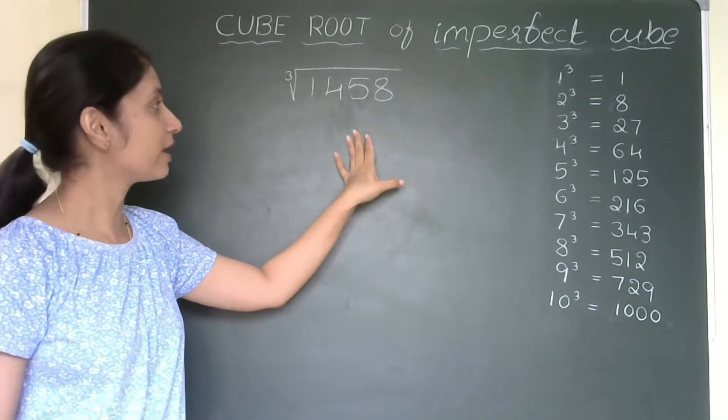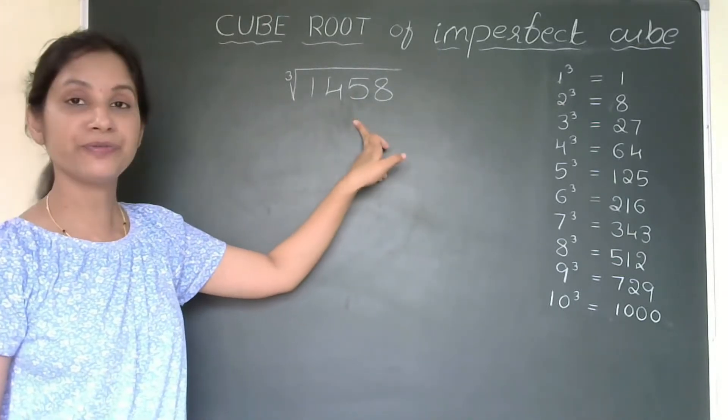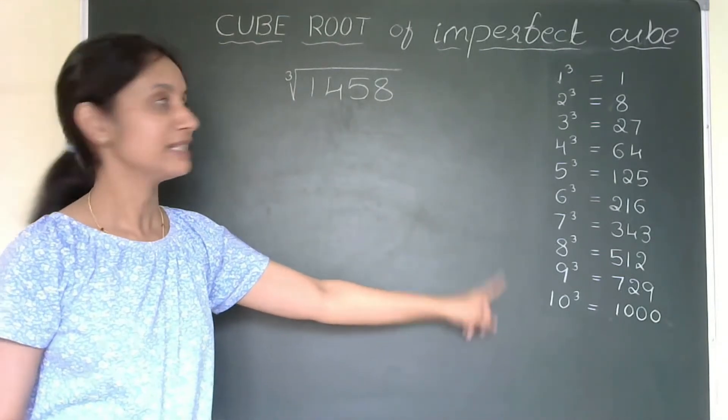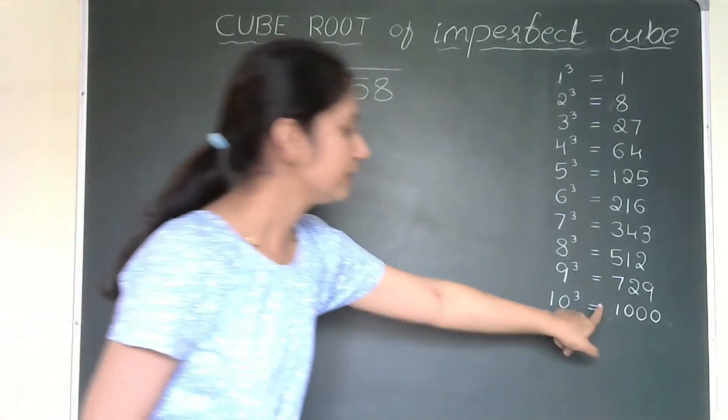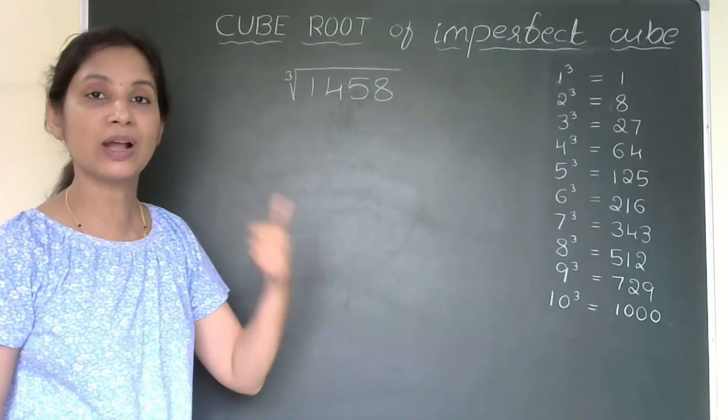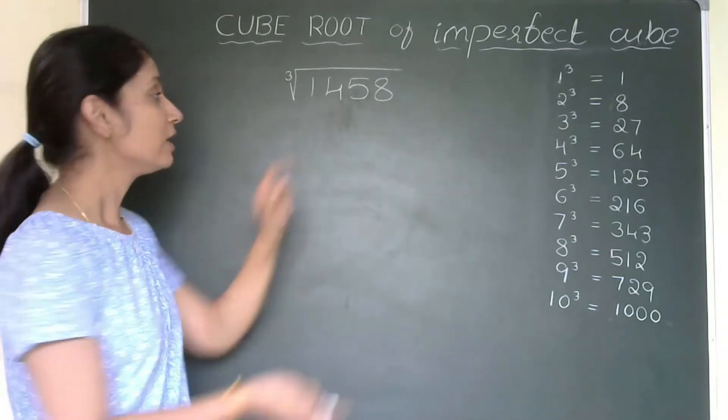So, the first step what I will follow? I will split the number. The nearest perfect cube for this number is, it is not in this list. But we can guess. See, 1000 is cube of 10. If I take 11, I will get 1331 which is near to 1458, right?